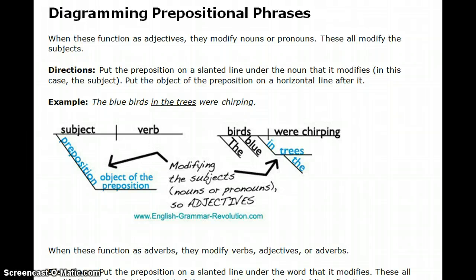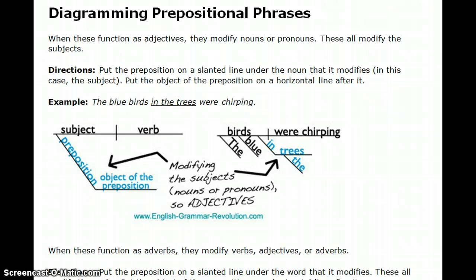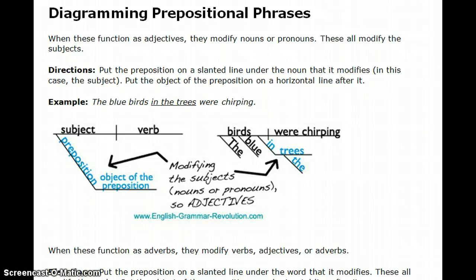When we diagram prepositional phrases, we put the preposition on a slanted line, just like any other modifier. But remember, now we're dealing with the whole phrase. Prepositions will take objects and form prepositional phrases. The object is simply the noun following that preposition — in the trees, on the beach, through the weekend, to the park are all examples. They end with nouns, called objects of prepositions.